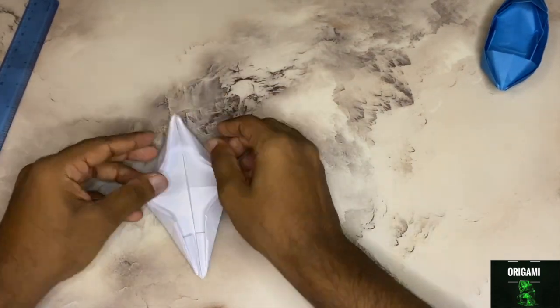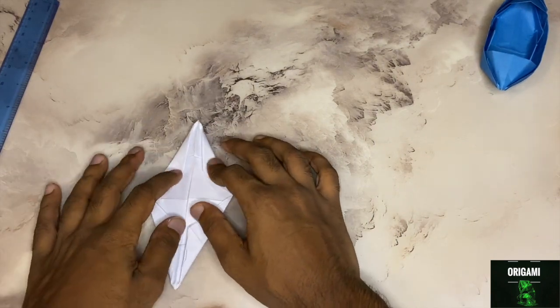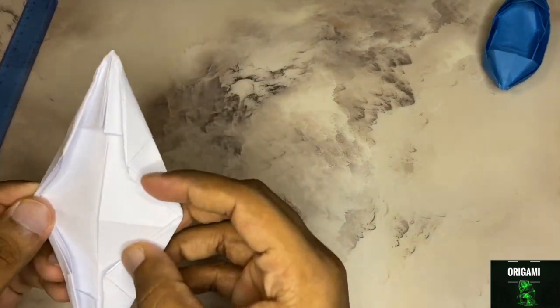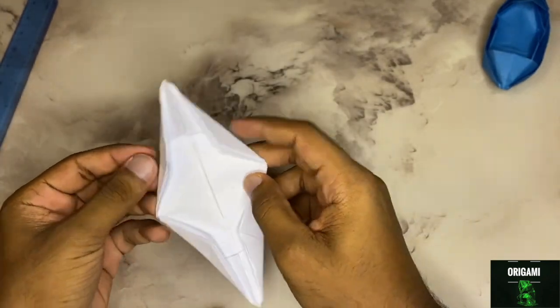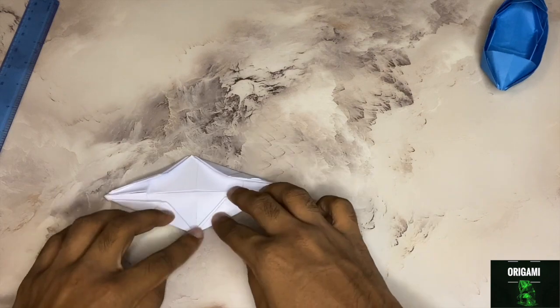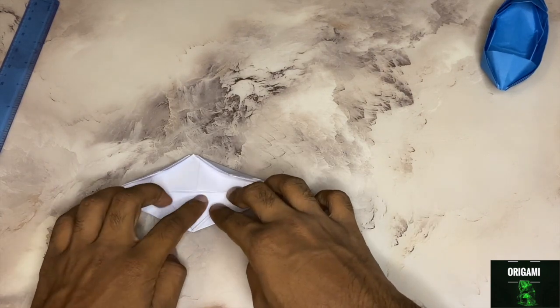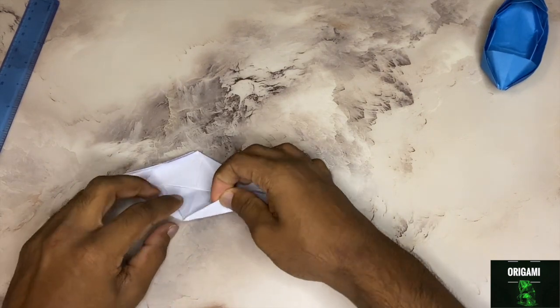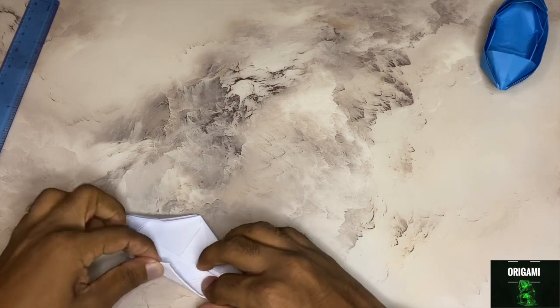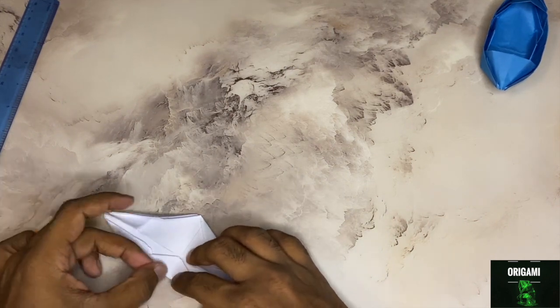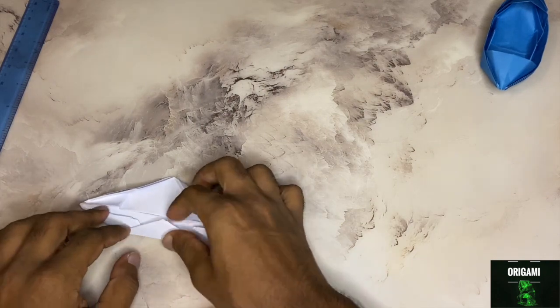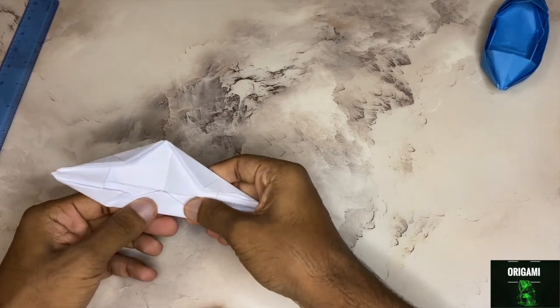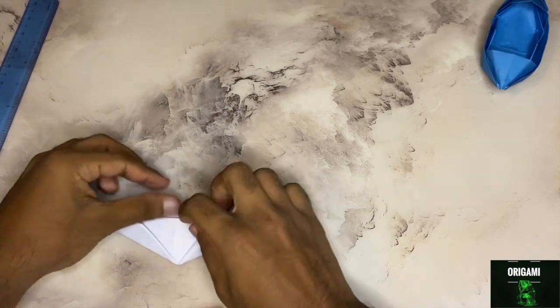There. So the next step is to take this tip and fold it up to the center. The paper is very thick here so make sure you're creasing well. This side as well.